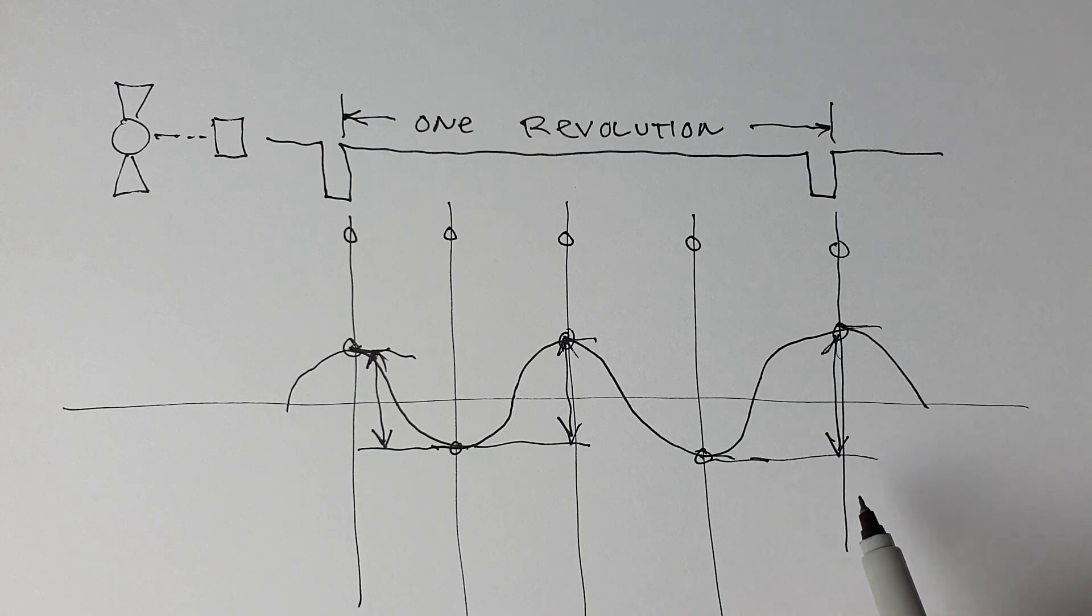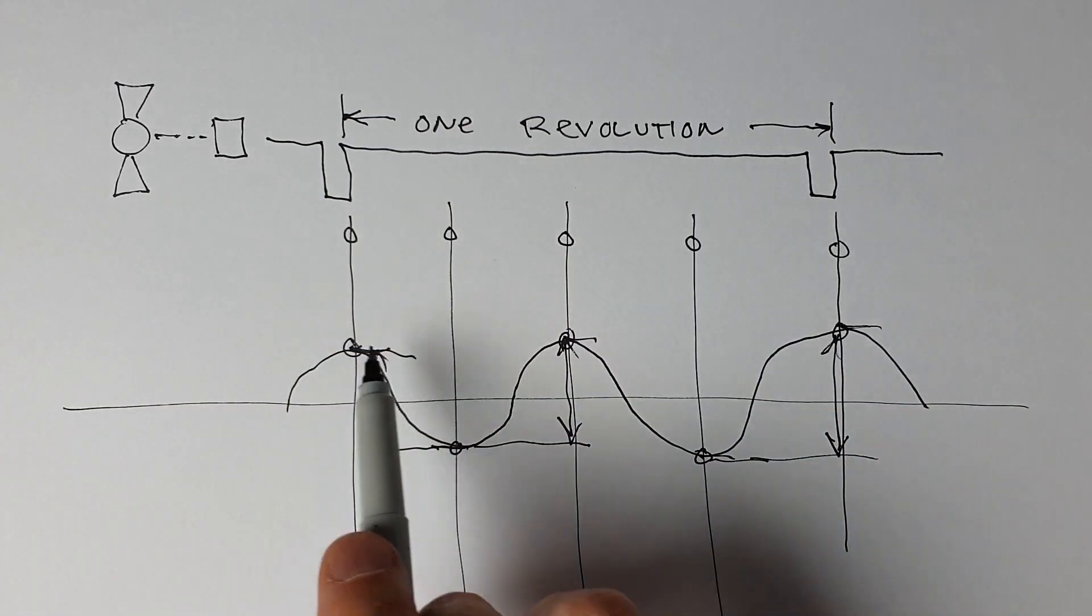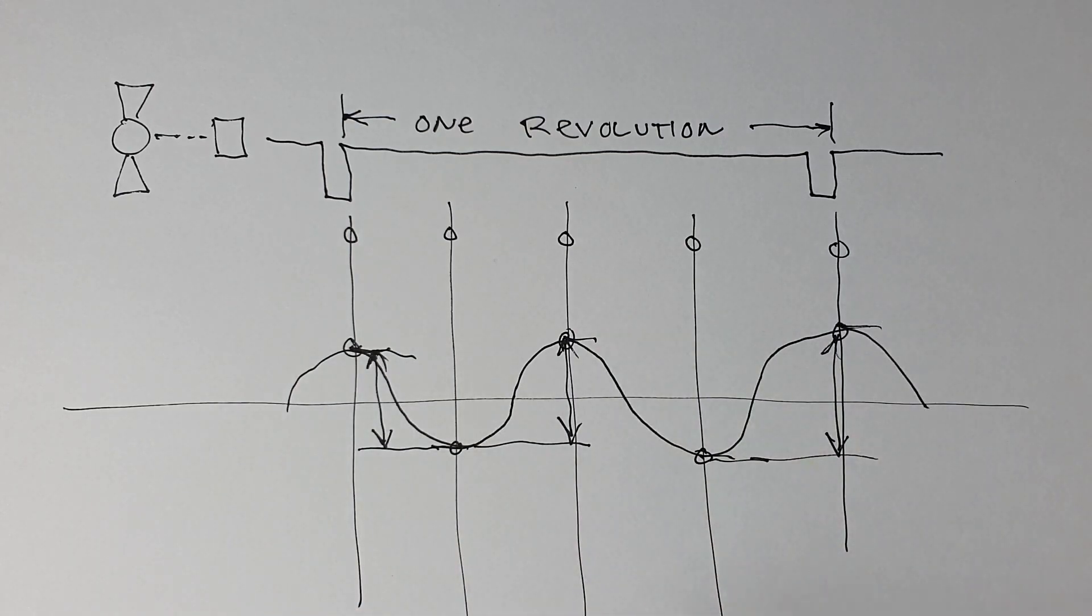So that's basically how we use the once per revolution signal to decode this signal from the preamp.